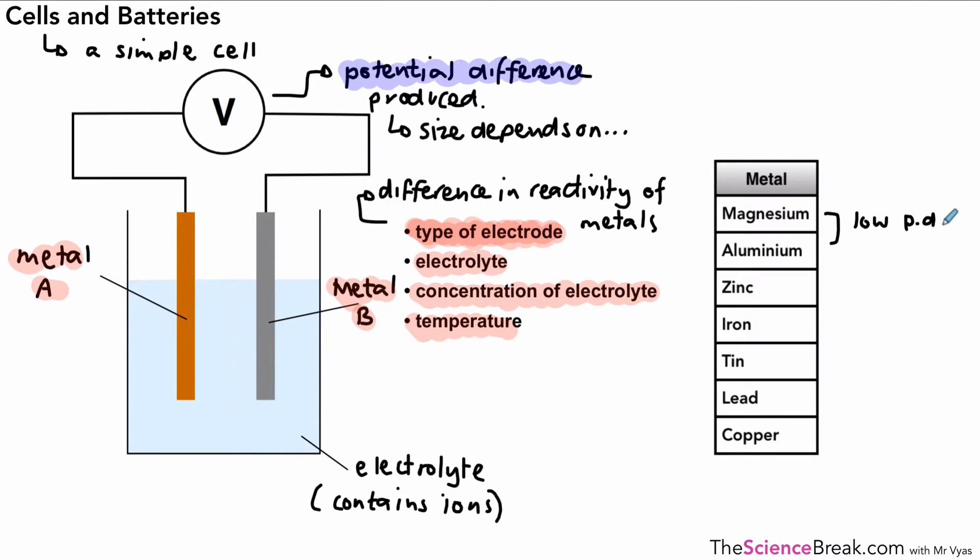For example, if the two metals were magnesium and aluminium, there is a small difference in reactivity, so you're going to generate a low potential difference. However, if we use say aluminium and copper, well there's a bigger difference in reactivity, so you're going to generate a larger potential difference because of the bigger difference in the reactivity of those two metals.